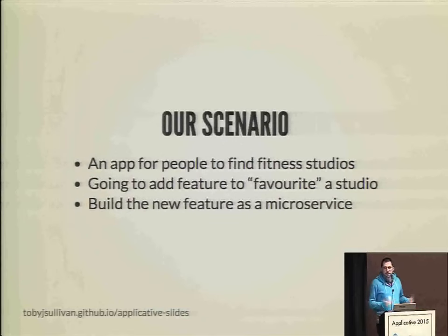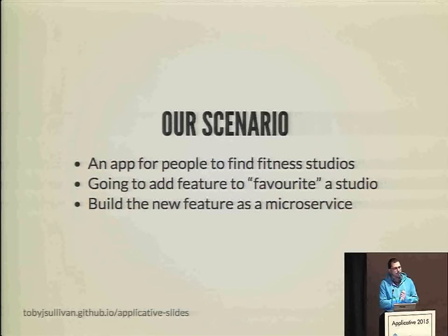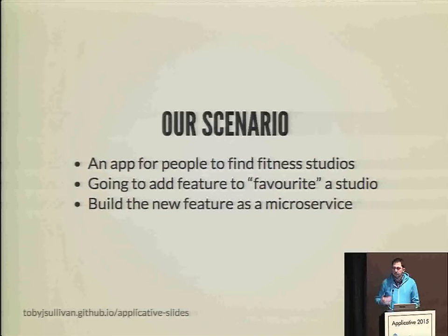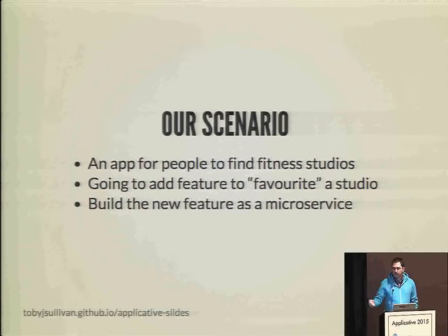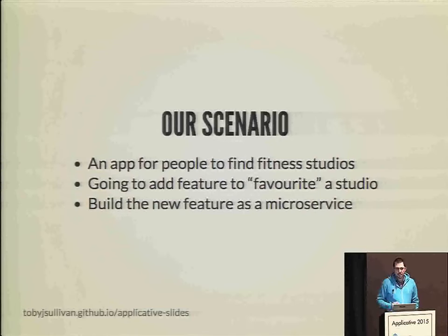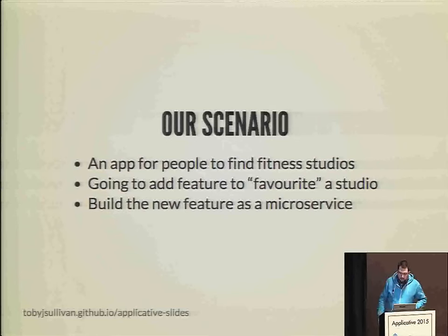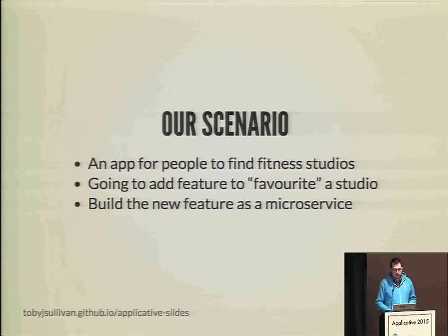So what's our scenario for today? Imagine we have a simple consumer phone app that just helps people find a fitness studio near them. You want a yoga class, you can find one. What we're going to do is add the feature for a person to favorite a studio - pretty simple. Just hit the star on your app and it's favorited. We're going to build this new feature as a microservice to demonstrate what we can do.